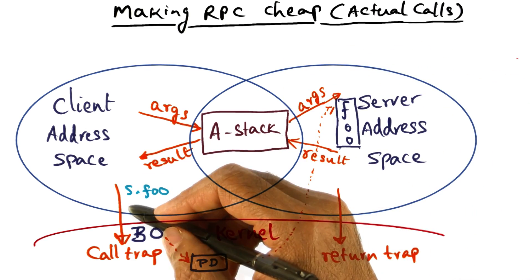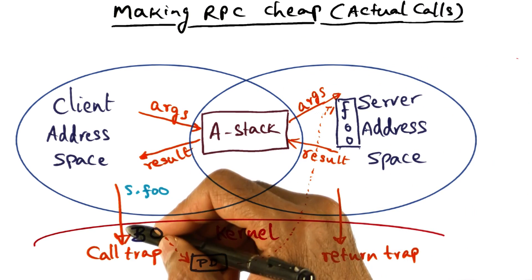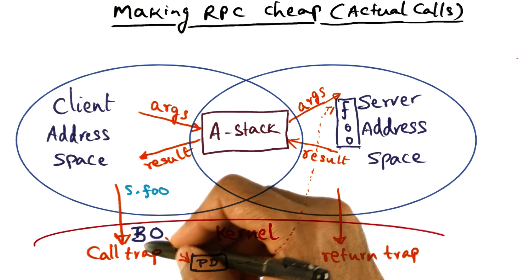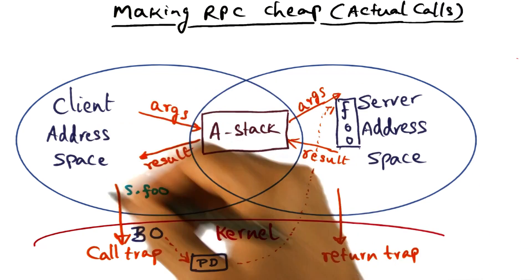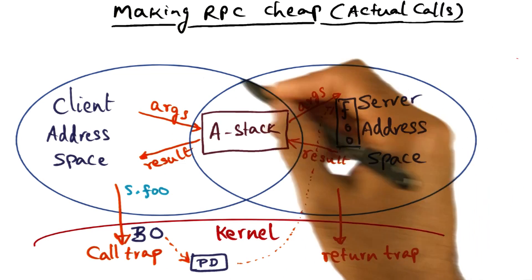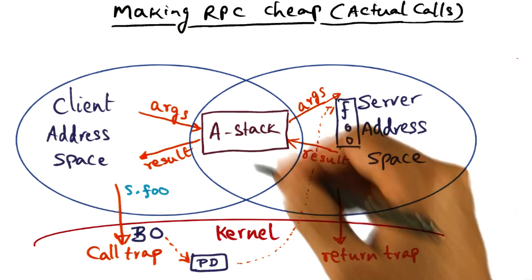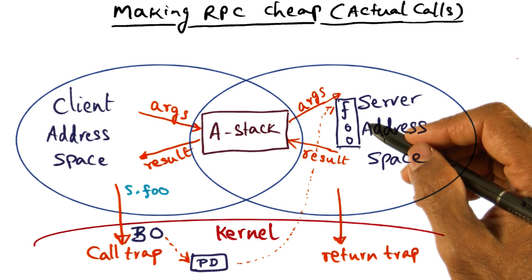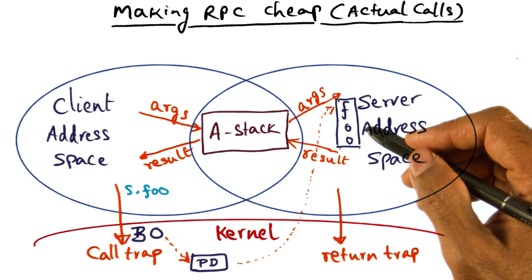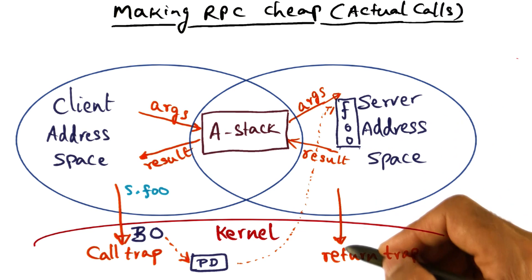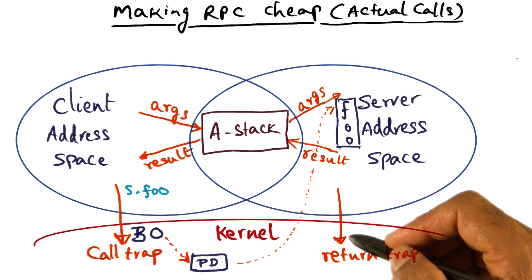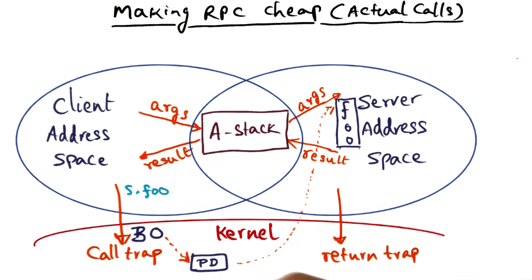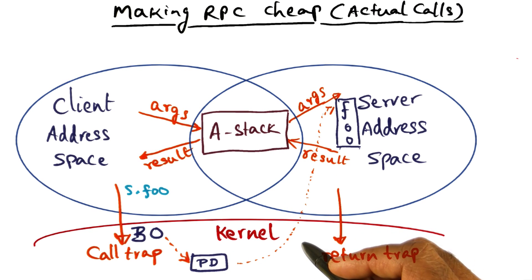The first explicit cost is the client trap and validating the binding object. The second explicit cost is switching the protection domain from the client to the server so that we can start executing the server procedure. And the third explicit cost is the return trap to go back to the client address space.